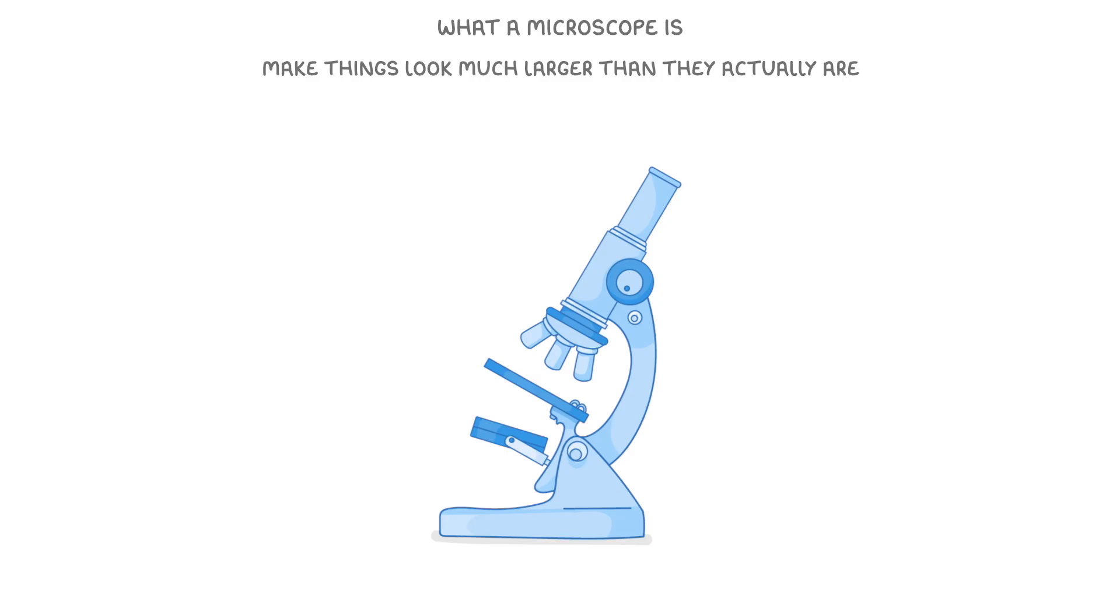For example, we often use microscopes in biology to look at cells, which we can't see with the naked eye but can see with a microscope. Before we go any further, we need to introduce the terms object and image.